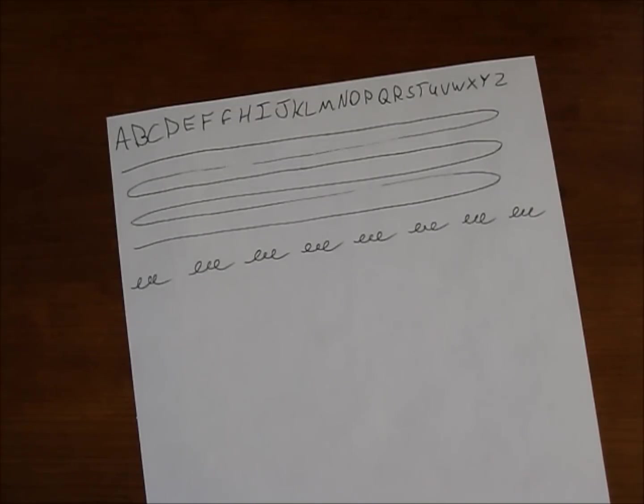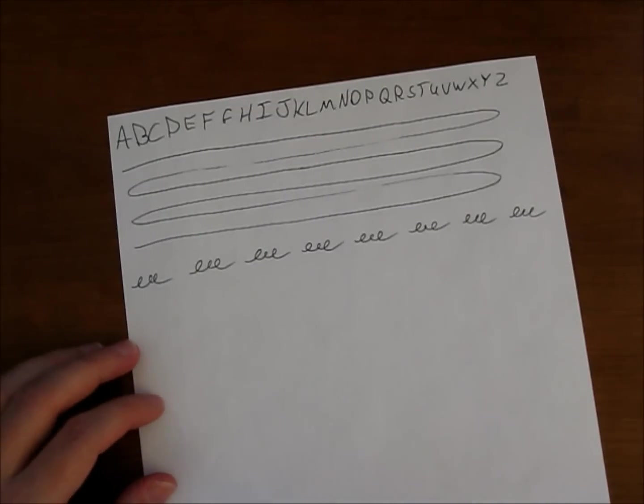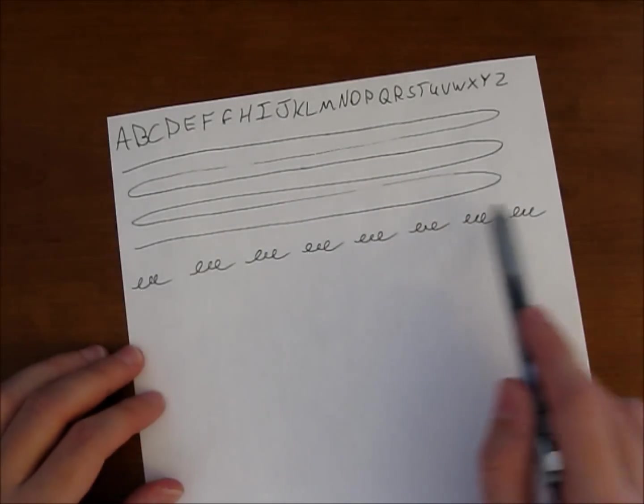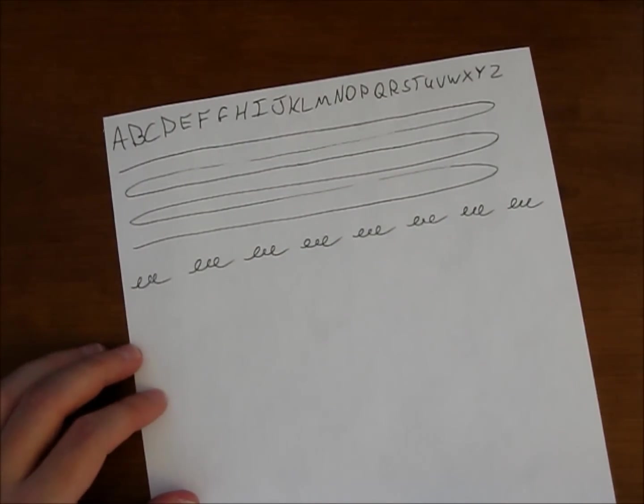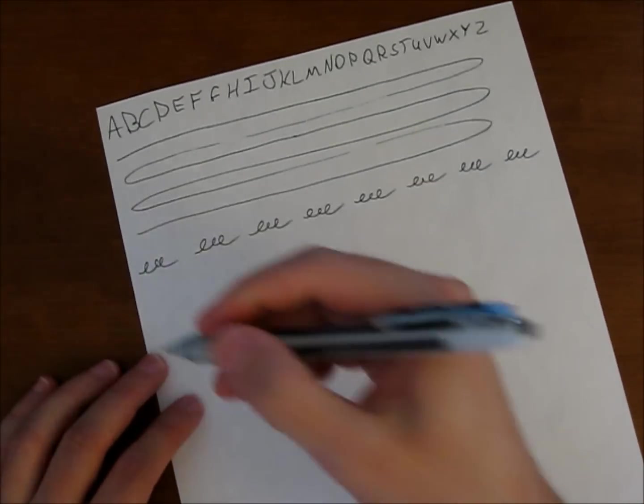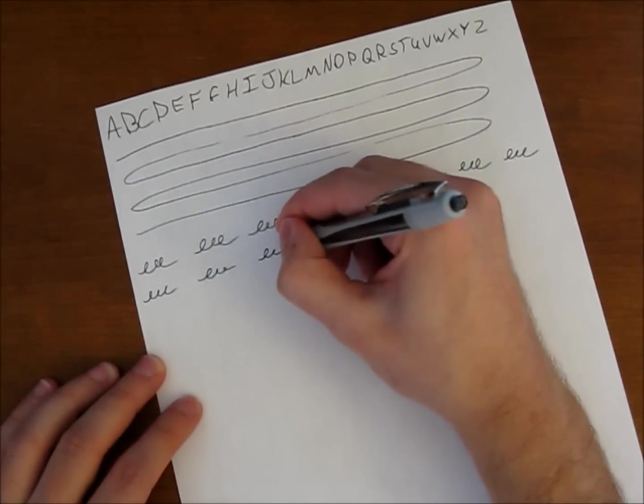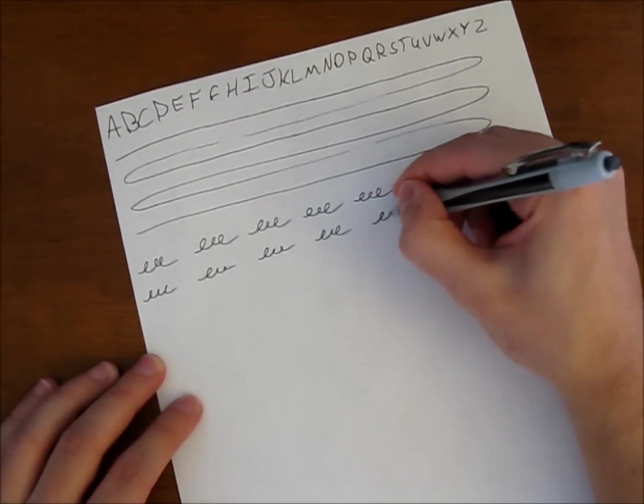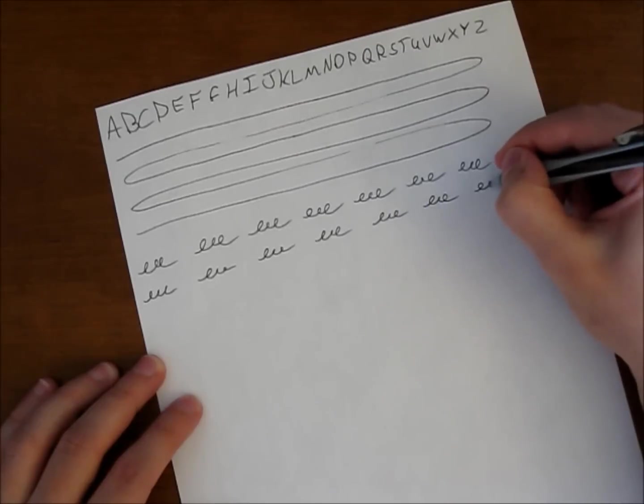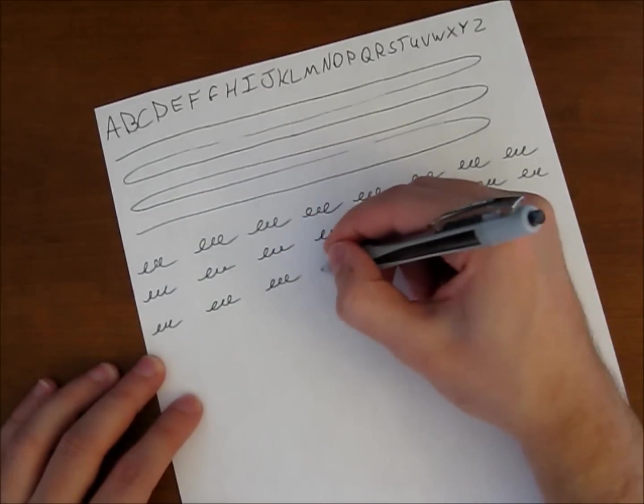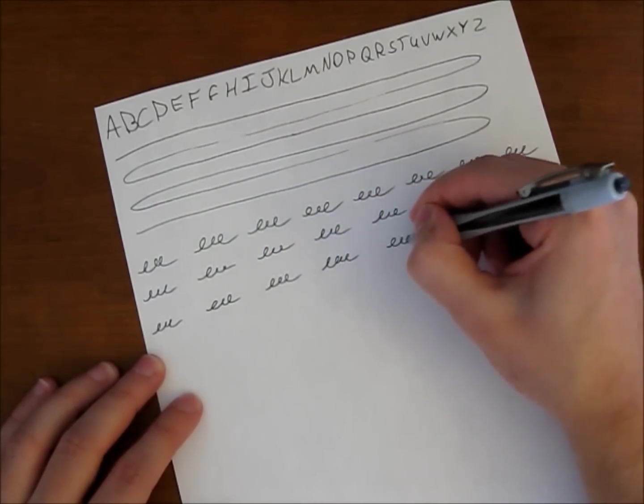It's a very consistent ink flow. I actually didn't get much skipping in all the writing I've been doing all day with it. However, I did get a little bit here on these solid lines I was writing across. To be honest with you, aside from that, the ink flow has been extremely consistent. We really don't get much blobbing. A little bit here and there. It's not anything that really takes away from the pen. It's not really a negative point to the pen at all.